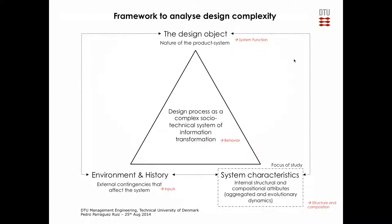The research approach connects engineering design knowledge with complex socio-technical systems theory and network science — specifically network analysis — to work in this interaction space. A design process can be framed as a complex socio-technical system that transforms information: we pick up requirements as basic information, transform and recombine them, and eventually produce a detailed design. The information transformation is the behavior we want; the detailed design is the function. The environment and history also shape the process.